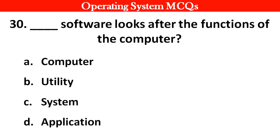Next question: Dash software looks after the functions of the computer. Options: A. Computers. B. Utility. C. Systems. D. Application. Right answer is option C: Systems.